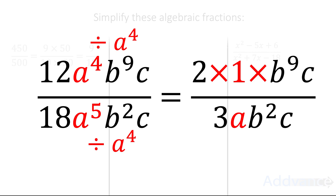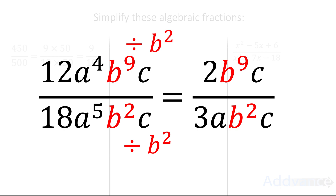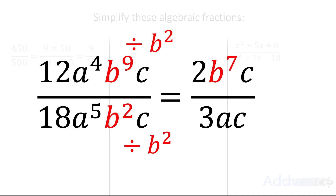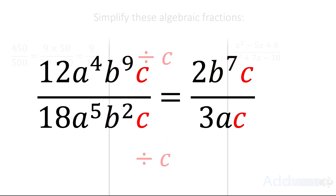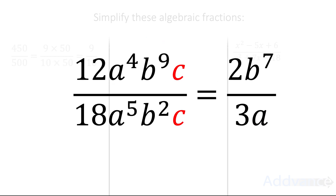When we multiply by 1, it's like leaving it as is, so we can just leave out the times by 1. Next, for b to the power 9 and b squared, we divide by b squared on top and bottom. We get b to the power 7 on top, and b squared divided by b squared is 1, so we leave that out of the bottom. Finally, c divided by c gives 1 on the top and bottom, which we just leave out. The final answer is 2b to the power 7 over 3a.